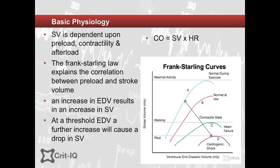The measures we use to estimate fluid status are based on our current understanding of fluid physiology. Specifically, if compliance of the left ventricle remains static, the left ventricular end-diastolic volume is proportional to the left ventricular end-diastolic pressure. This is the basis of using right and left pressures as measures of ventricular preload. So measuring the end-diastolic pressure in the right atrium, or CVP, may guide the assessment of preload.